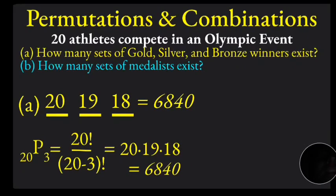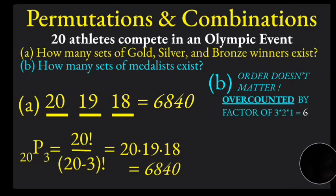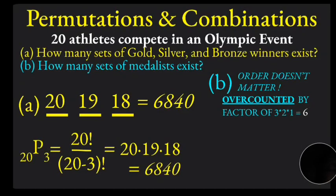The next part of this problem, written in blue, is how many sets of medalists exist — part B. The deal here is that now the order doesn't matter, because you're just proud to be a medalist and glad to be on the podium. We have overcounted in part A by a factor equal to how many ways we can arrange three particular individuals on a podium. For example, it doesn't matter if it went Jamaica, United States, United Kingdom versus United States, United Kingdom, Jamaica — everybody's just happy to be on the podium.